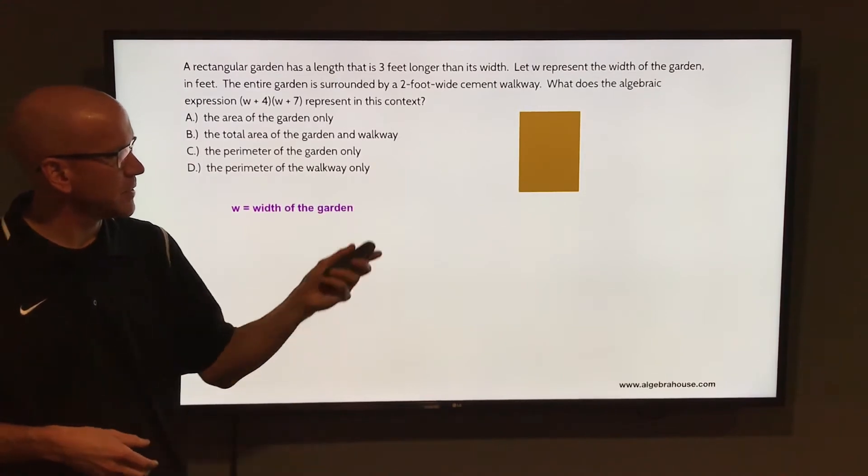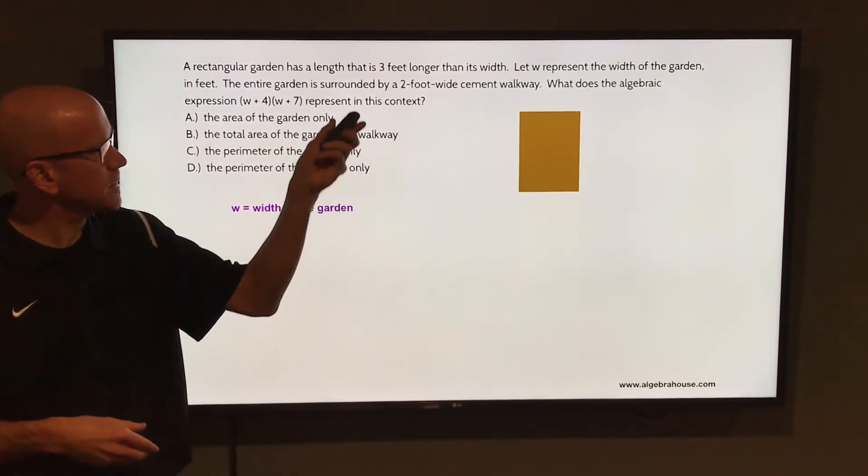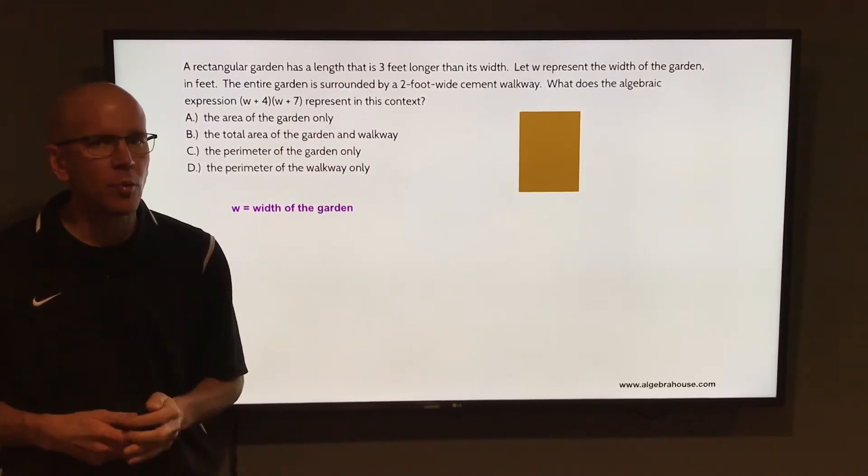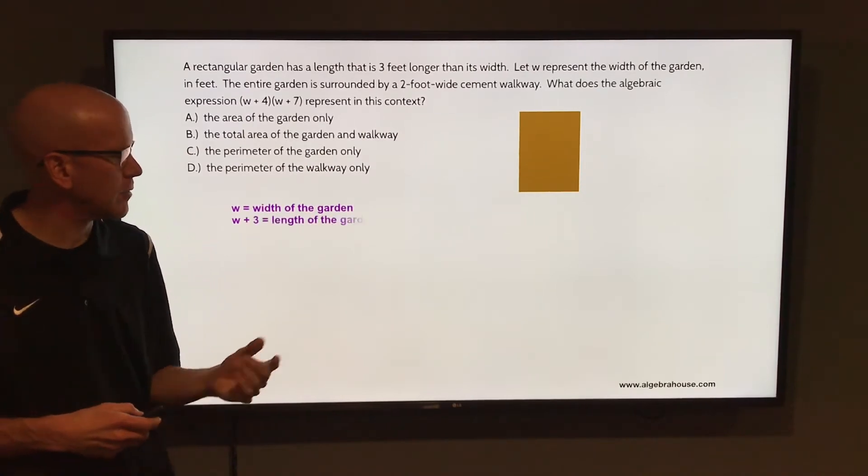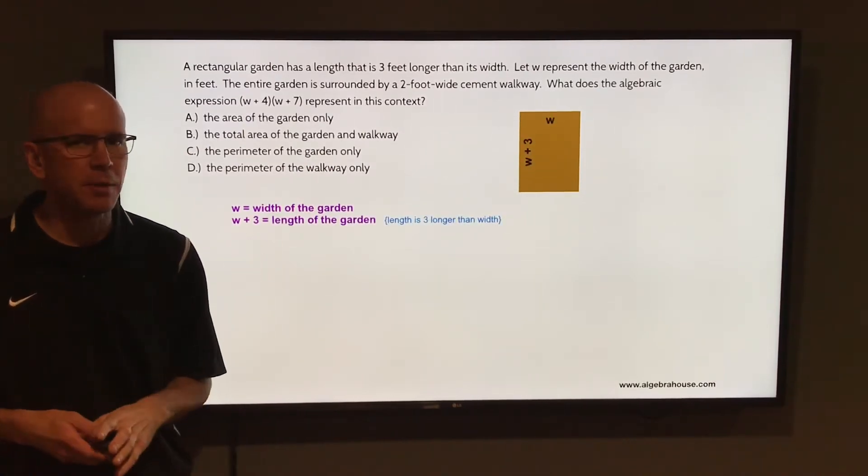It says let W represent the width of the garden. Then it says the length is three feet longer than the width. So if the length is three feet longer than the width, the length would be represented with W plus three.